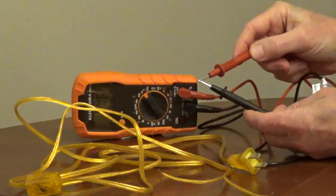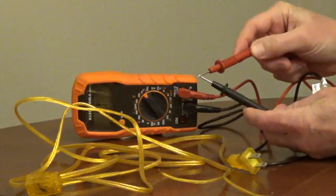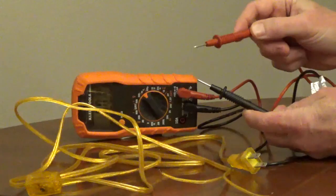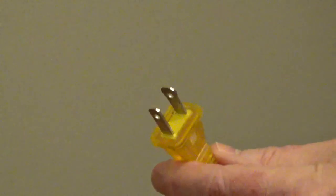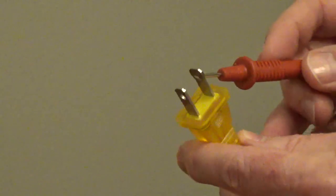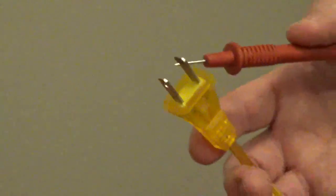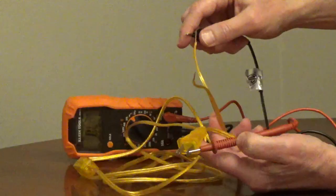Put your dial on the omega symbol or the sound wave symbol to hear a sound if there's continuity. Test between the wide blade on the plug, which is the neutral blade, and the end of the wires to find the neutral.